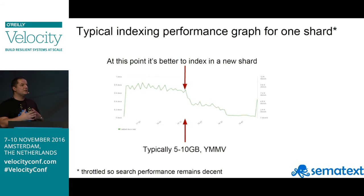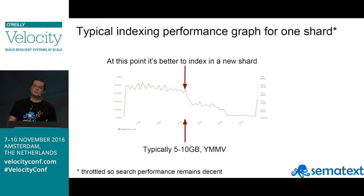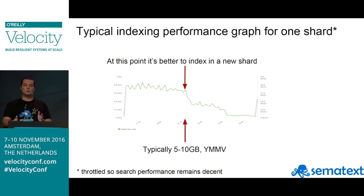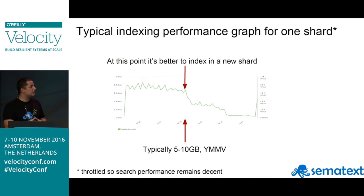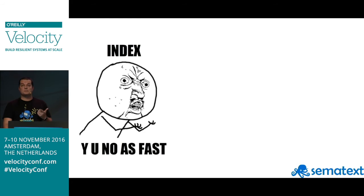There's also a point when indexing into Elasticsearch where performance drops. That's typically between 5 and 10 gigabytes per shard — at least from our tests and from running our own environment. We run into that problem around 5 to 10 gigabytes per shard when indexing throughput drops drastically, as you can see on the graph.